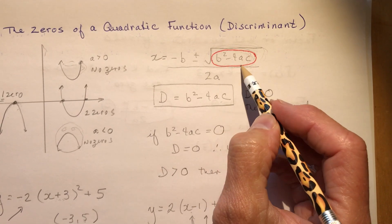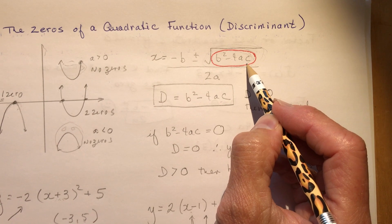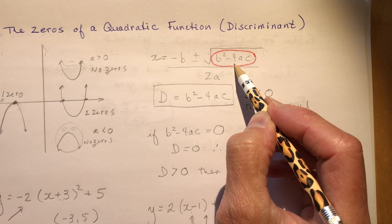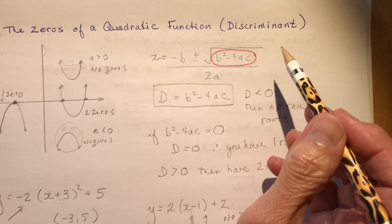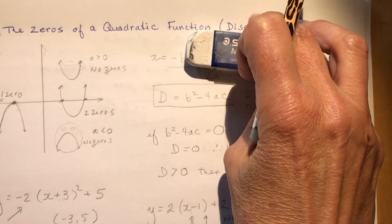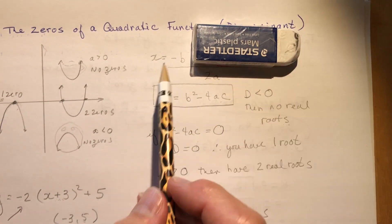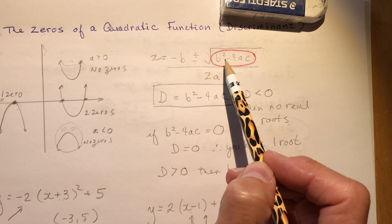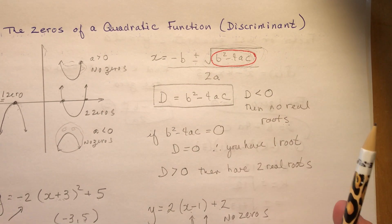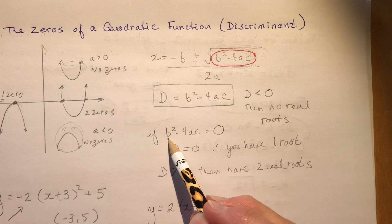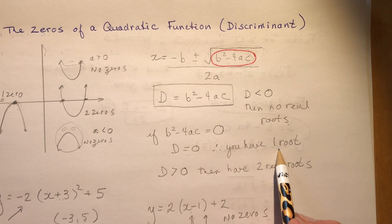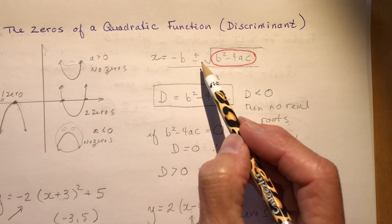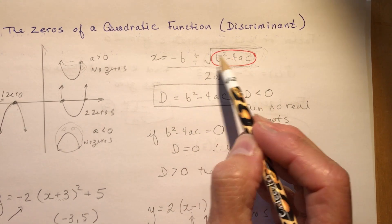If the discriminant is less than zero, you can't take the square root of a negative number and get a real solution, so there are no real roots. If the discriminant equals zero, it eliminates the radical from the quadratic formula, leaving only −b over 2a — one answer. The plus or minus is what gives you two solutions, so if b² − 4ac equals zero you have one root, and if the discriminant is greater than zero you have two real roots.